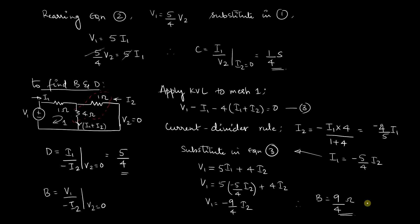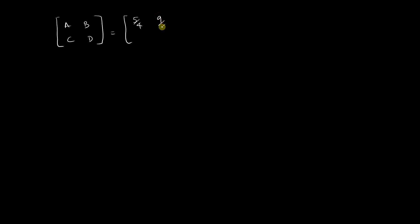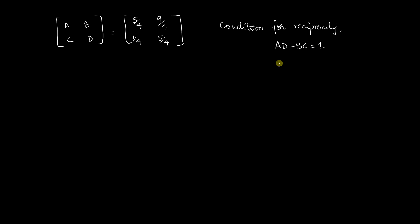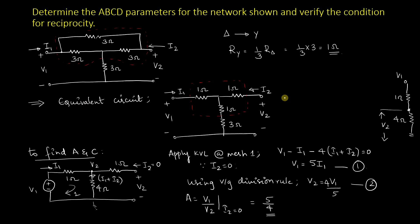To verify reciprocity, the condition AD − BC = 1 must hold. The parameters are: A = 5/4, B = 9/4, C = 1/4, D = 5/4. Substituting: (5/4)·(5/4) − (9/4)·(1/4) = 25/16 − 9/16 = 16/16 = 1. The condition is satisfied, confirming the network is reciprocal — as expected since there are no dependent sources.